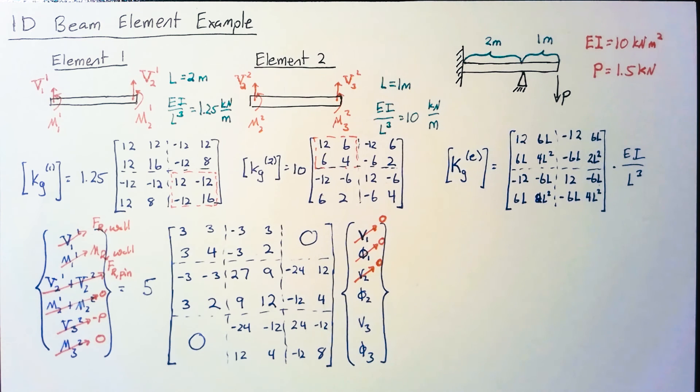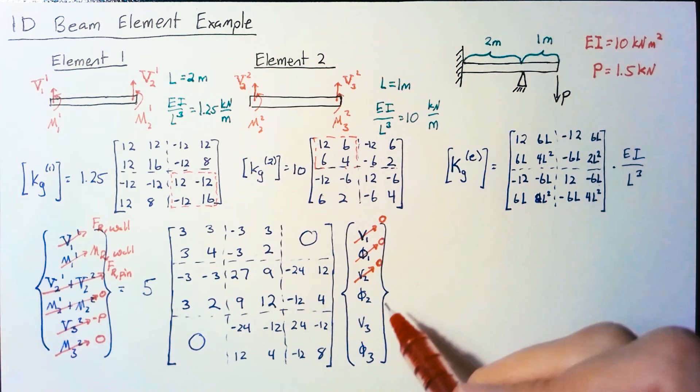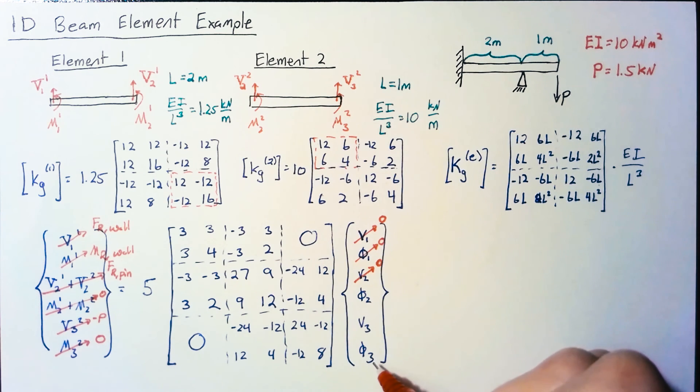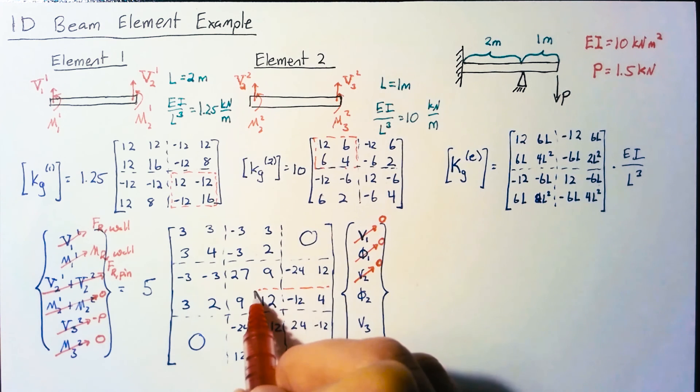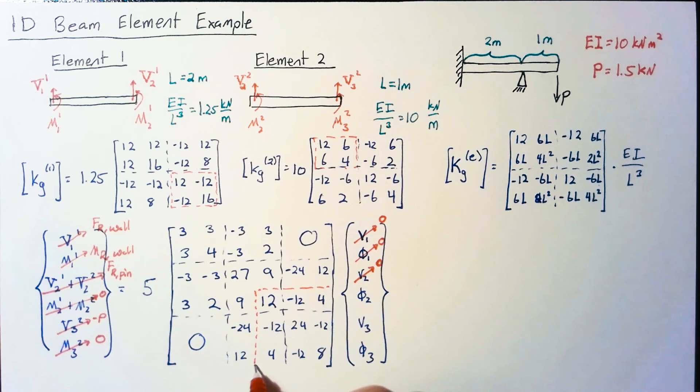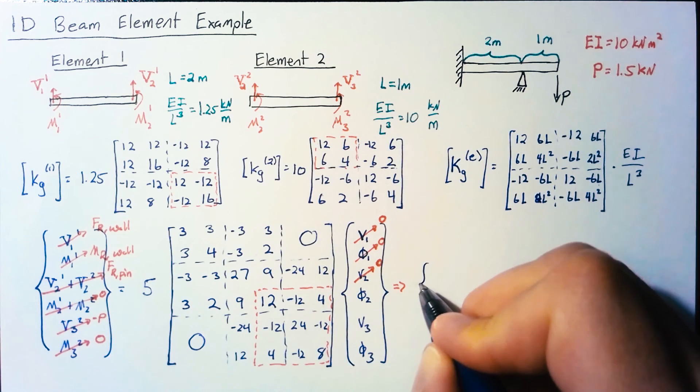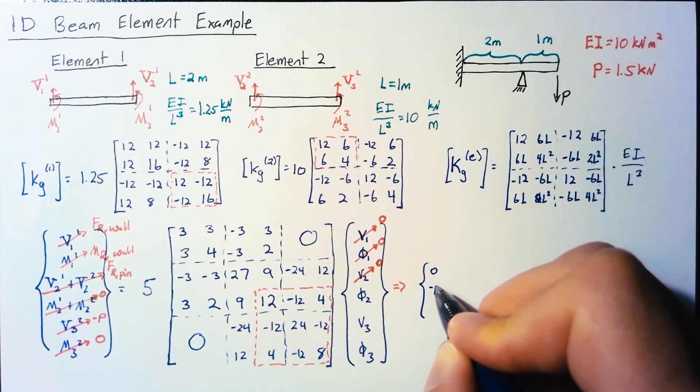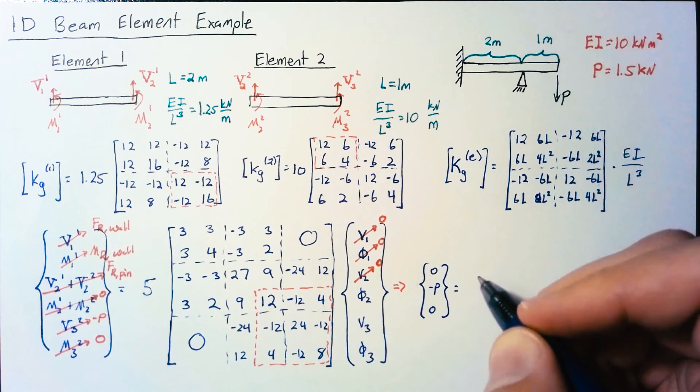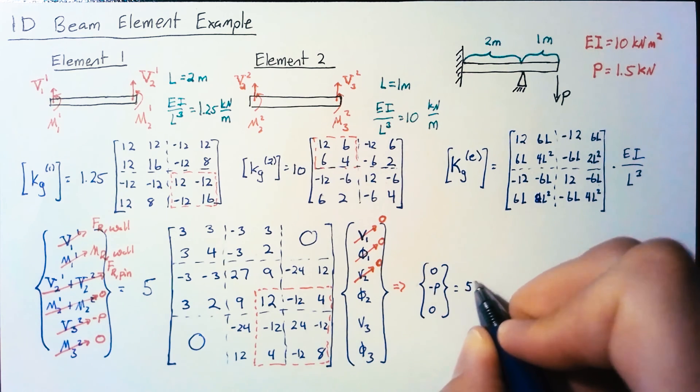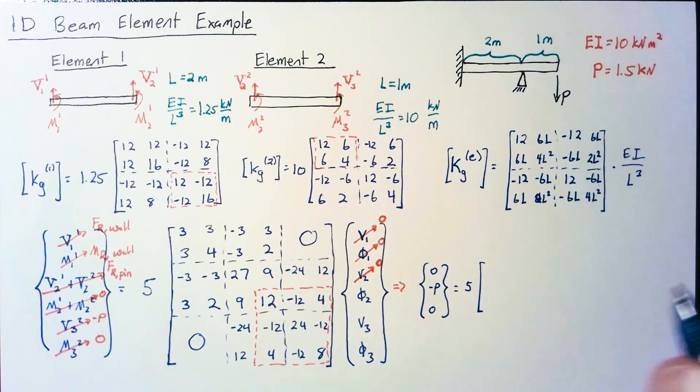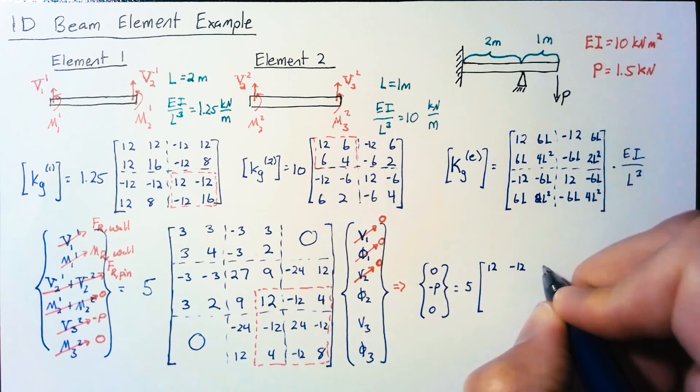Looking at what we're actually solving, the system of equations comes from the displacements that are left. Since we only have three displacements left, we only need to solve this bottom right 3 by 3 matrix. Our force vector reduces to 0, -P, 0 equal to 5 times what's in the 3 by 3 matrix.